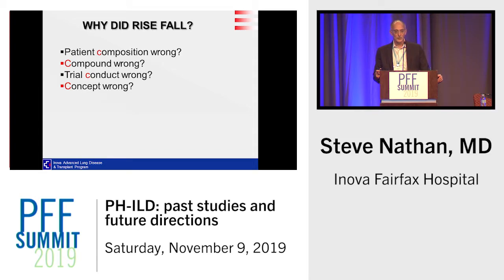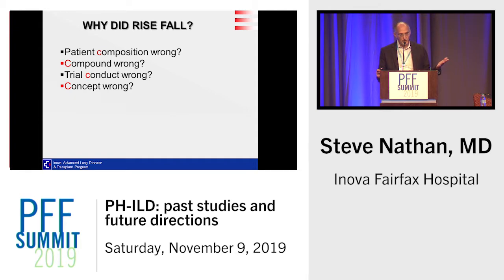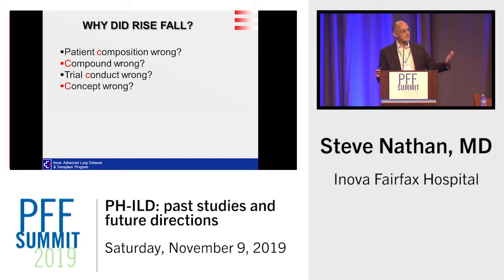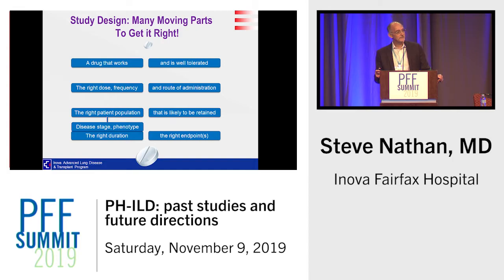As the quote goes: 'The great tragedy of science — the slaying of a beautiful hypothesis by an ugly fact' — and that's why we do clinical trials. So why did RISE fall? I have four Cs: did we get the patient composition wrong — the wrong phenotype? Was it the wrong compound? Was there something wrong with the trial conduct? And most importantly, is the concept wrong — should we not be targeting PH in ILD at all? Is this an adaptive rather than maladaptive phenomenon? Clinical trial design has many moving parts: right drug, right dose, right patient population, right duration, and right endpoints.